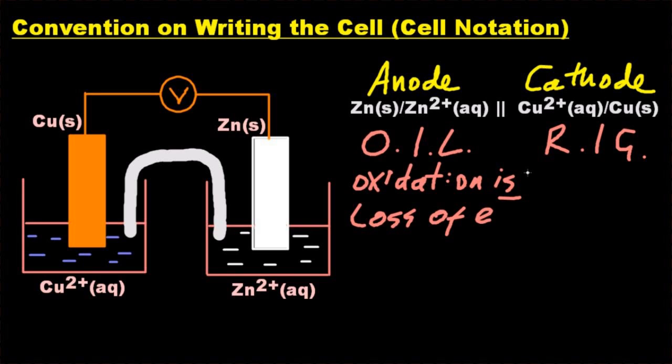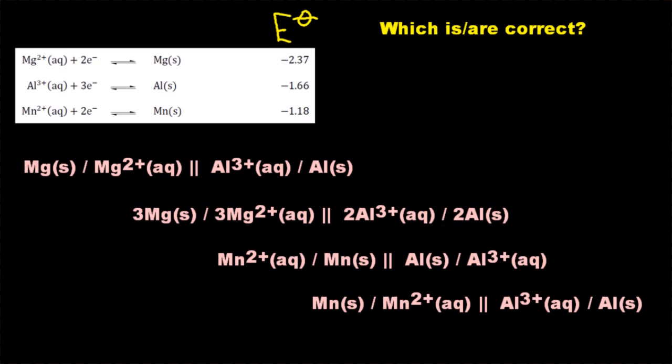And so the zinc half-cell wants to lose electrons. It's the most negative, it's throwing off all these electrons, it hates electrons the most. So it has the most negative e-cell value - that means it hates electrons the most, and vice versa for the reduction half-cell.